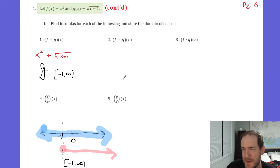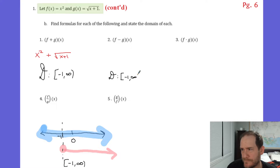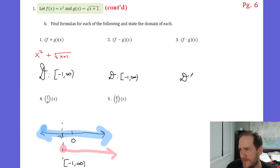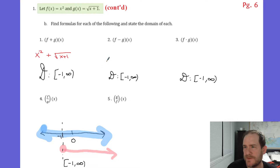We did also say that all of these domains would be the same because all of these domains are the intersection. So whether it's a sum function, difference function, or product function, they all have a domain that's just equal to the intersection of the original domains. And to write the function rule for the difference: it'll be x squared minus root x plus 1.